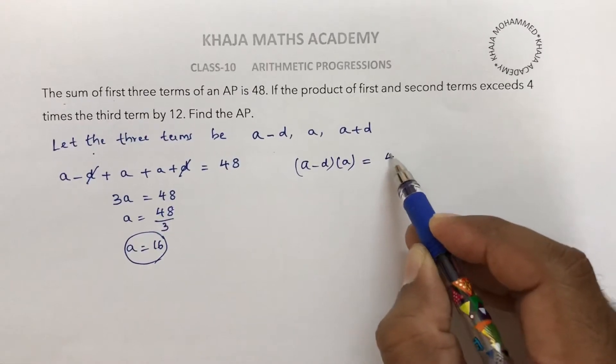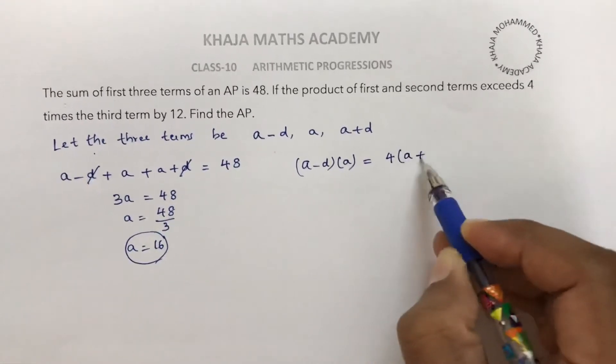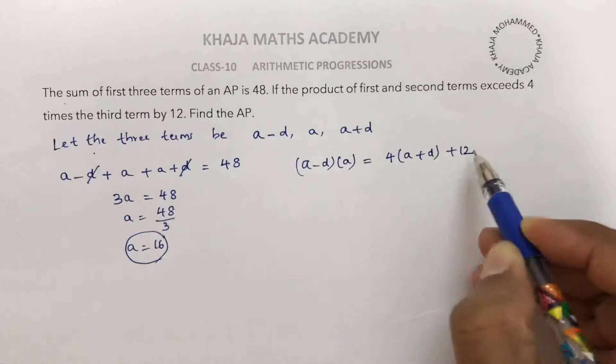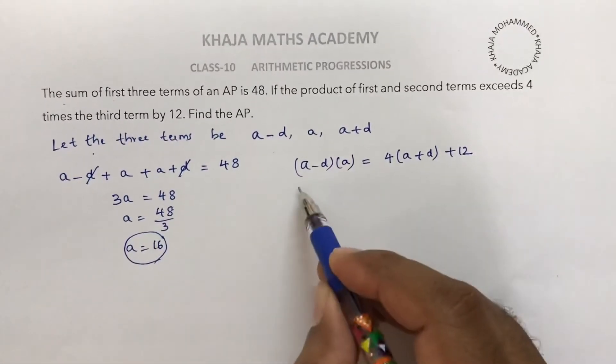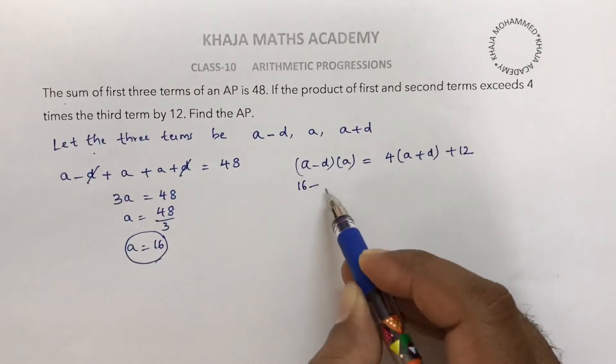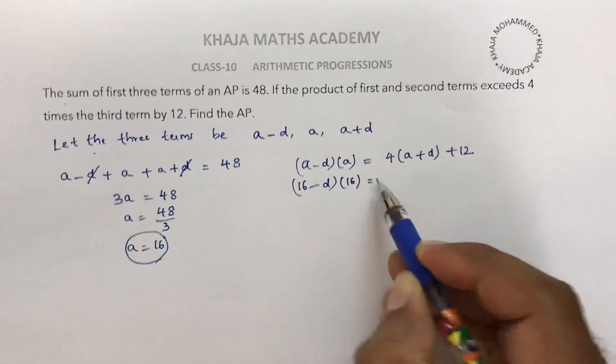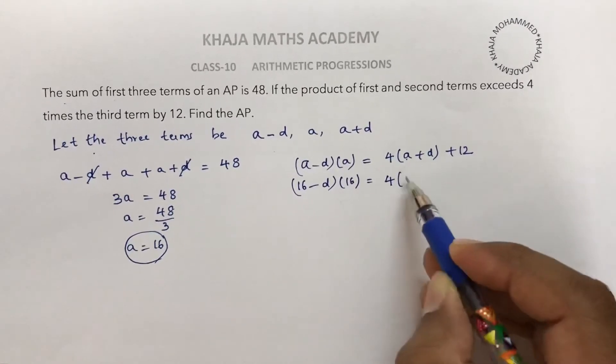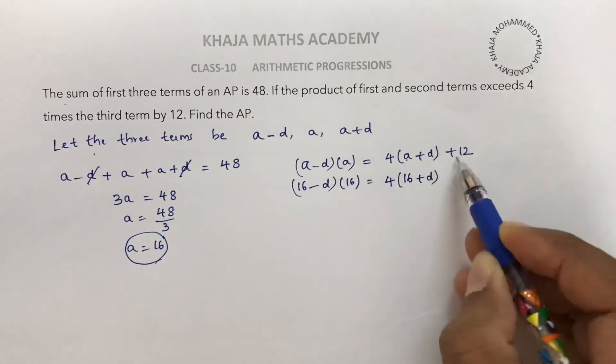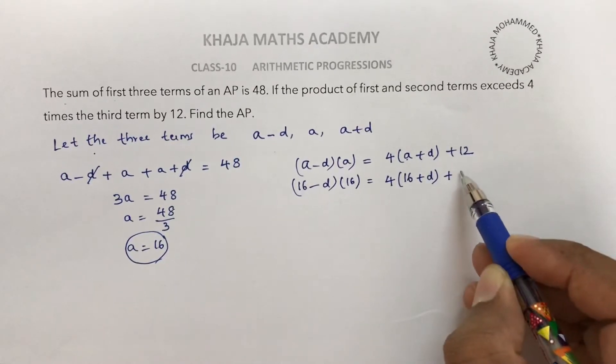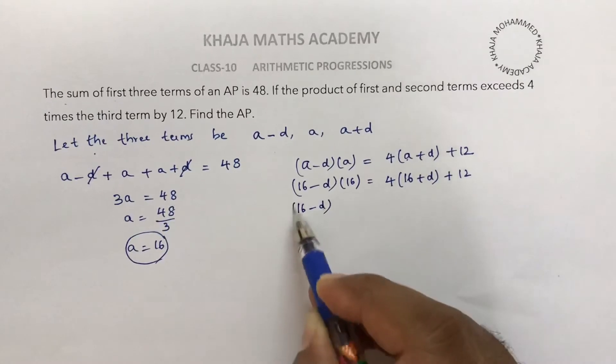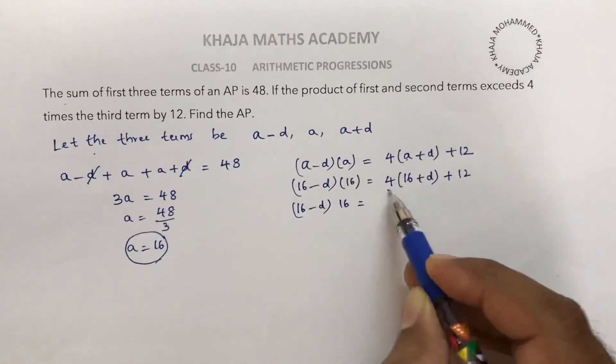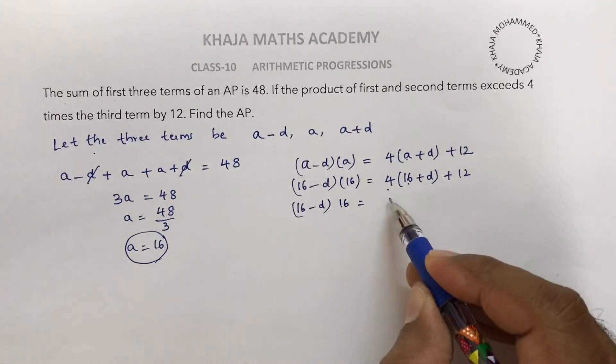...by 12. So (a-d)(a) equals 4(a+d) plus 12. Substituting a equals 16: (16-d)(16) equals 4(16+d) plus 12, which is (16-d)(16) equals 64 plus 4d plus 12.